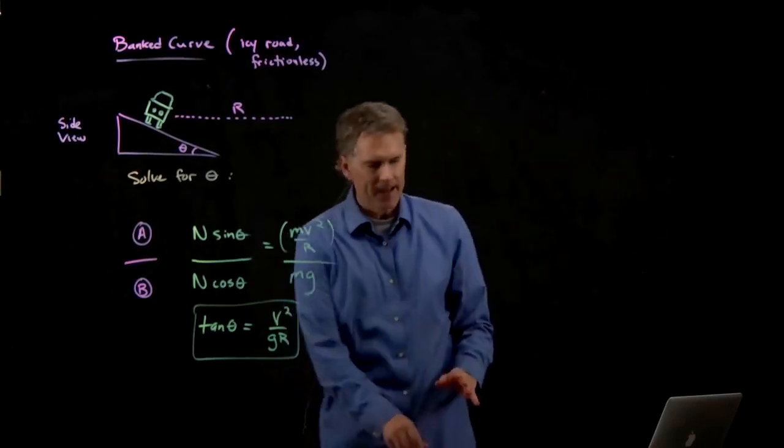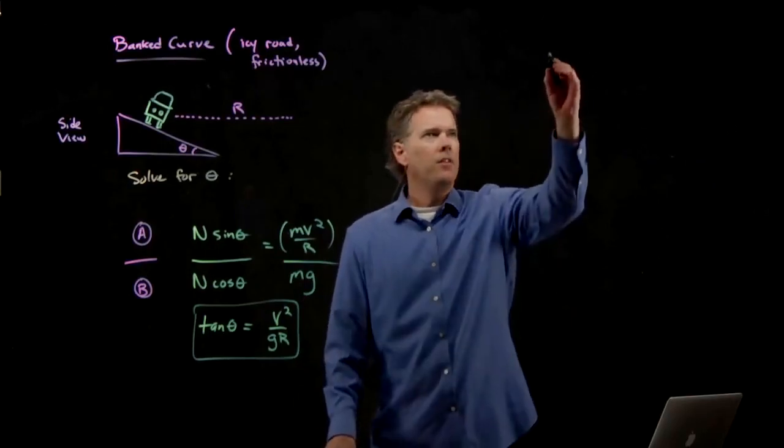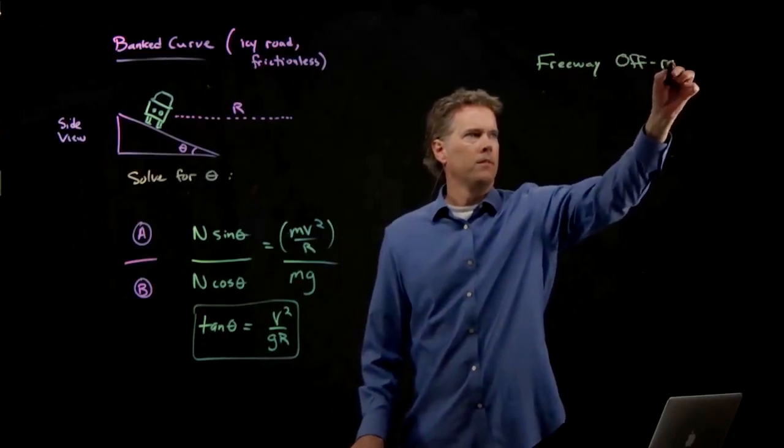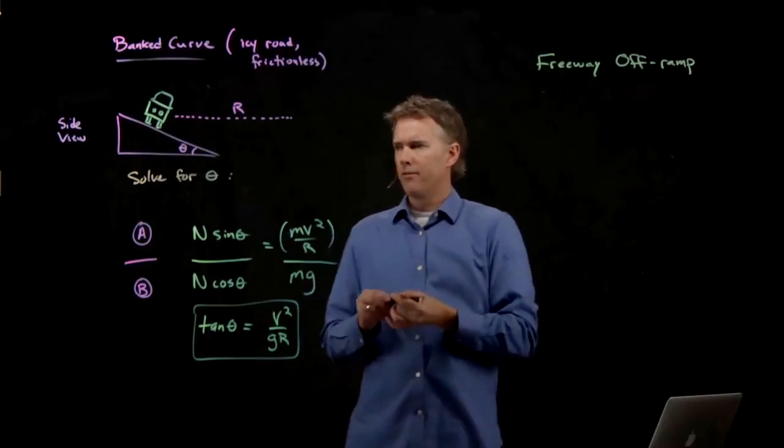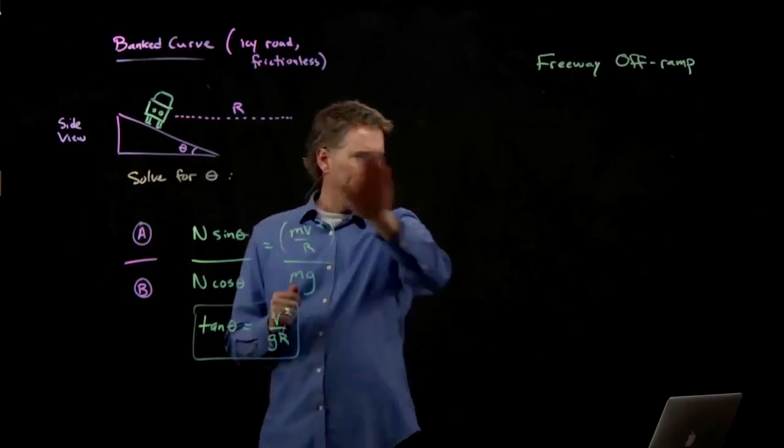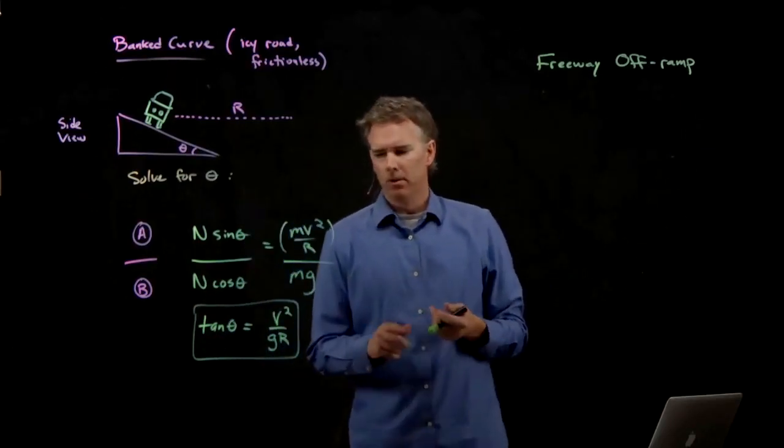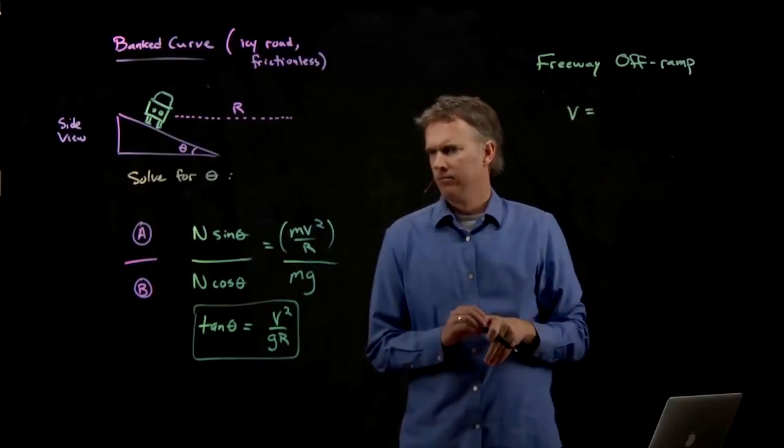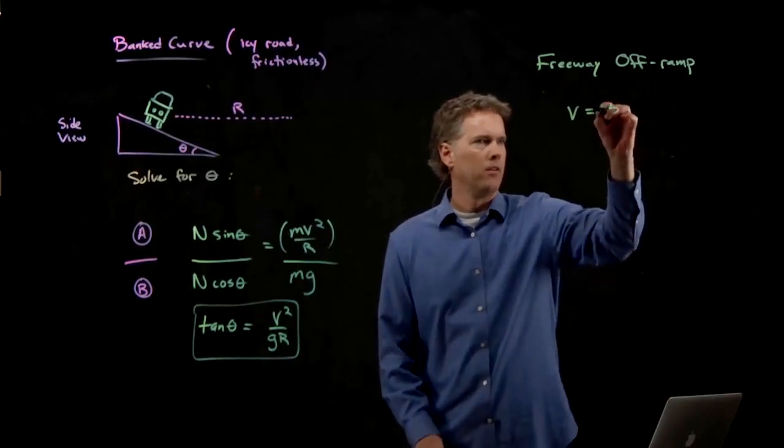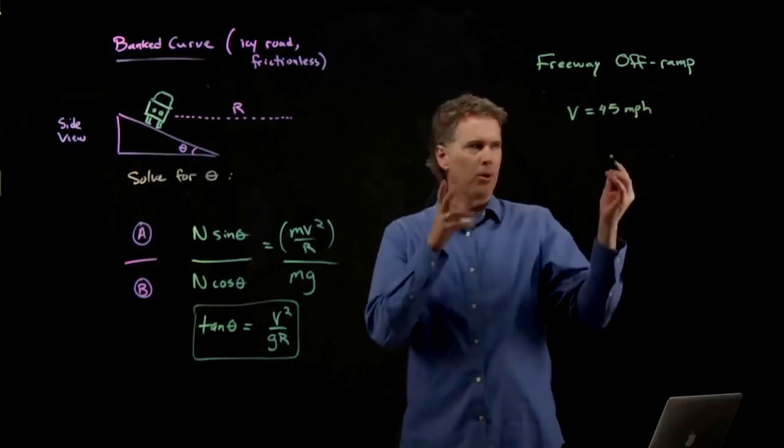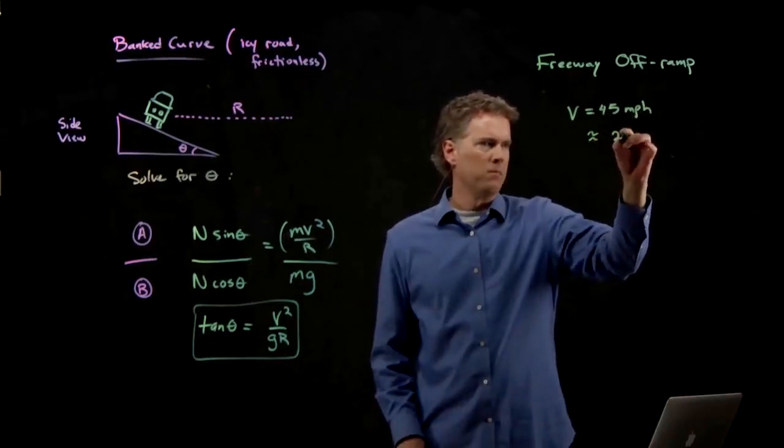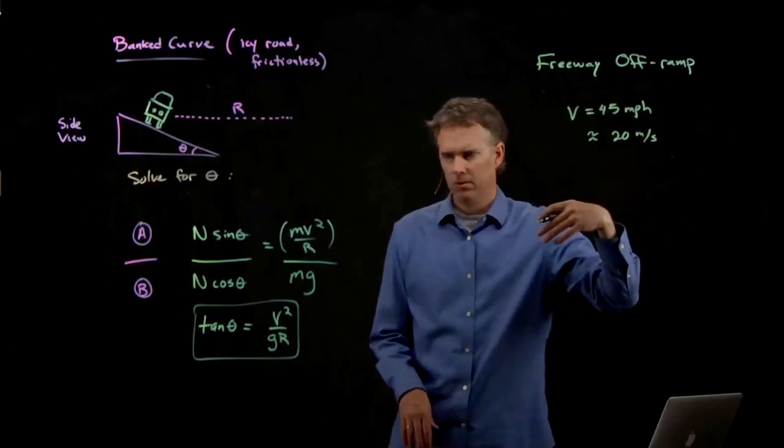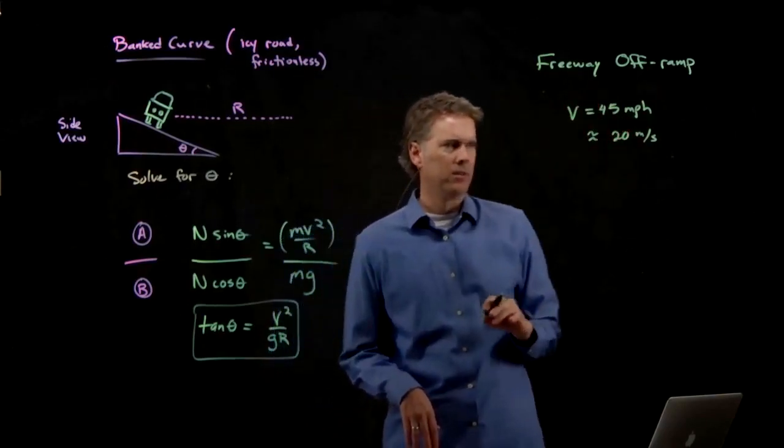So let's try this for a real setup. And let's just make up some numbers that we think are reasonable. Let's say this is a freeway off-ramp. We know that freeway off-ramps are banked. When you get off the freeway, they're banked. What is a typical speed that you might see on a freeway off-ramp? 45 miles per hour. 45 miles per hour, which is approximately 20 meters per second. It's roughly a factor of two. So it's probably a little bit off, but let's just say that's a good number.